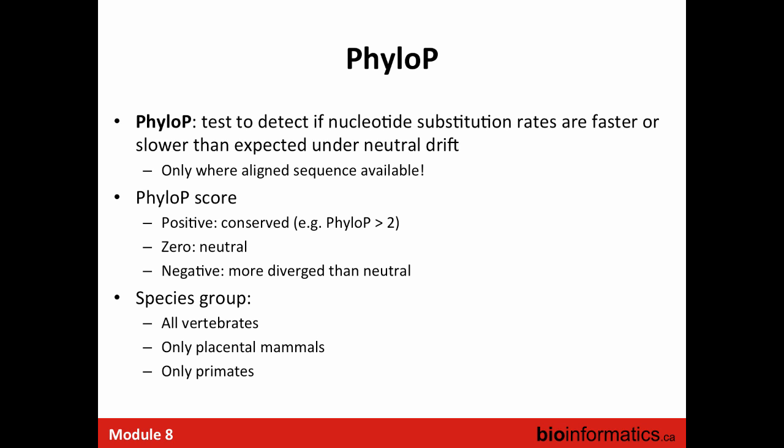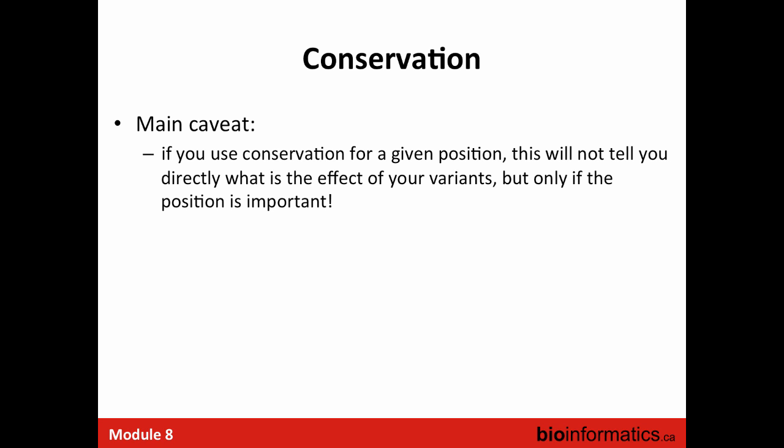A student asked about neutral drift. Genetic drift is the idea that something outside of natural selection causes a change in allele frequency in the population — a classic example being a volcanic eruption that kills a subpopulation, changing allele frequencies by sampling. Neutral drift would mean that's not happening. An important caveat: conservation at a given position only tells you that the position is important — it does not directly tell you the effect of the variant. That requires additional testing.